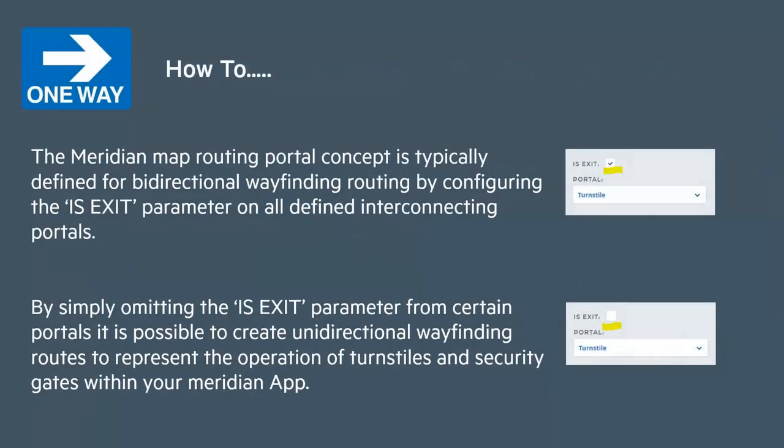We use the Meridian portal construct to implement unidirectional routes. By simply omitting the isExit parameter from certain portals we can create unidirectional routes representing turnstiles or security gates within an application.